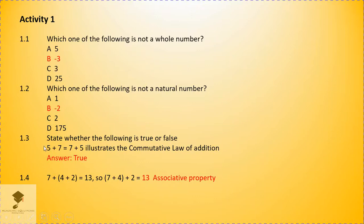1.3. State whether the following is true or false. 5 plus 7 equals 7 plus 5. Illustrates the commutative law of addition. This is true. Remember what we said about commutative law? Commutative property. We said A plus B is the same as B plus A. So, in this case, 5 plus 7 will be the same as 7 plus 5. So, our answer is going to be true.